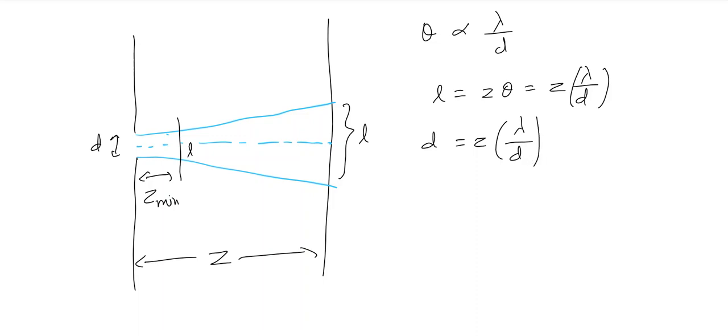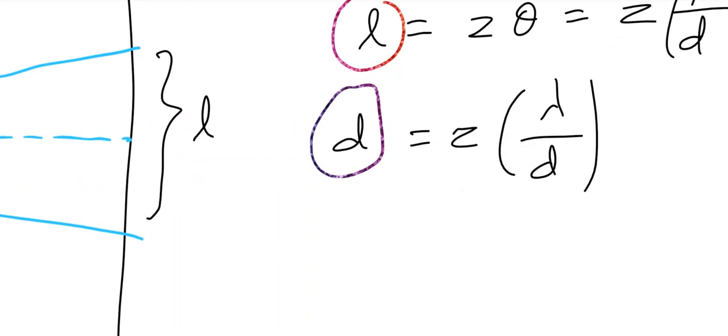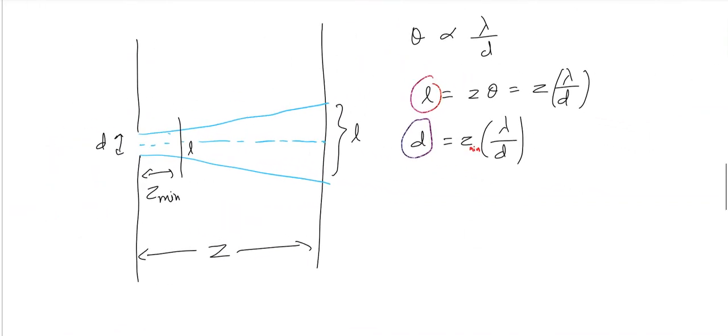When I am comparing this l with d, I cannot write z, I should write z minimum. So what is z minimum? Making z minimum the subject of the formula...